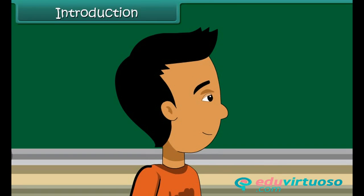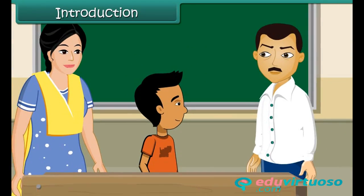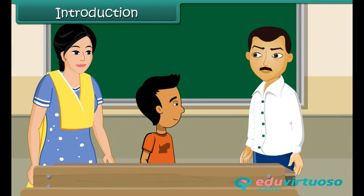Ramesh is a bright boy, eight years of age. He studies in a government school. Today he has accompanied his mother to the parent-teacher meeting. The teacher has one complaint: Ramesh takes leave frequently. As a result, his class and homework are incomplete. If he continues to be irregular at school, he may have to repeat the class.